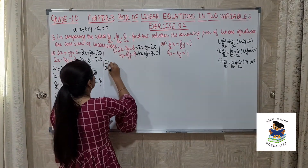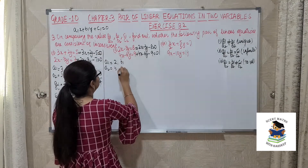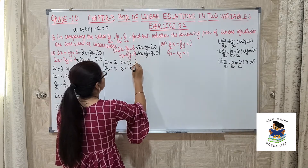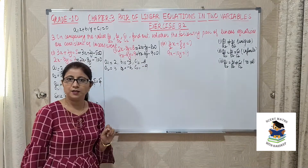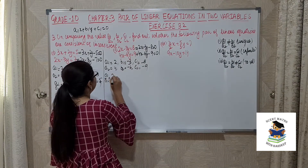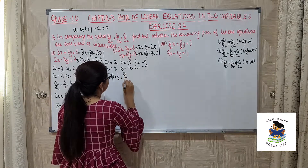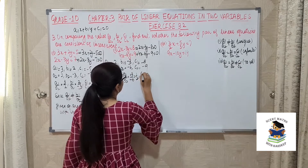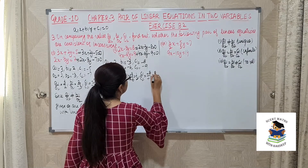Find a1 and a2: these are 2 and 4. b1 and b2 are −3 and −6. c1 and c2 are −8 and −9. Now find the ratios: a1/a2 = 2/4 = 1/2. b1/b2 = (−3)/(−6) = 1/2. c1/c2 = (−8)/(−9) = 8/9.